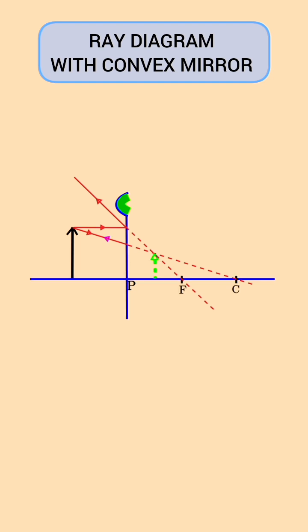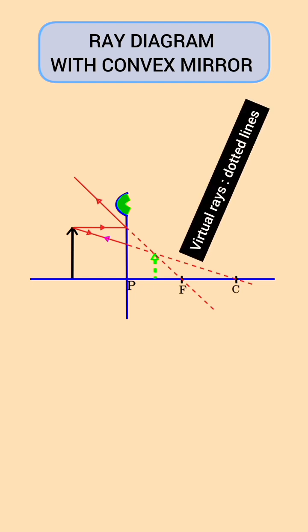The point of intersection of the rays is the position of the image. The rays intersecting behind the mirror are virtual and hence the image is virtual.